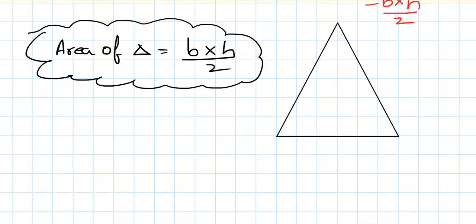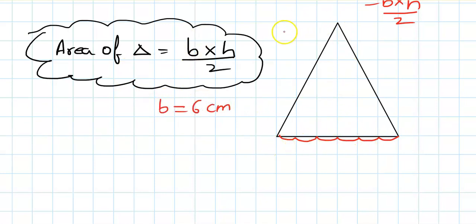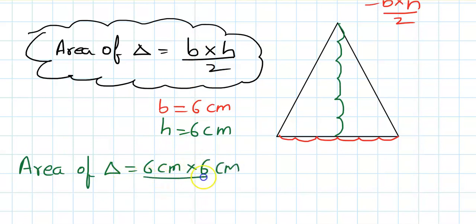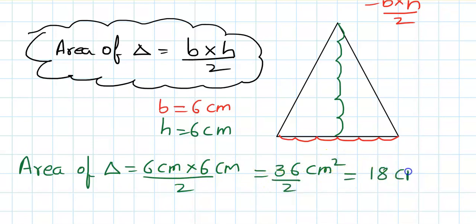Let's see a couple of questions. Area of triangle is base times height divided by 2. Counting the base: 1, 2, 3, 4, 5, and 6. So base is 6 centimeters. The height goes from this vertex to the base side: 1, 2, 3, 4, 5, 6. Height is also 6 centimeters. Plugging in: area = 6 centimeter × 6 centimeter ÷ 2. So 6 times 6 is 36, centimeter squared, divided by 2, gives 18 centimeter square.